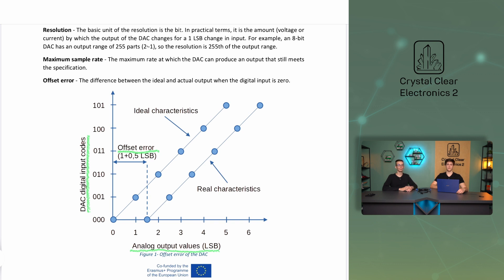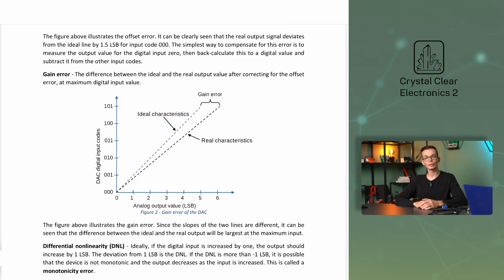The simplest way to compensate for this error is to measure the output value for the digital input 0, then back-calculate this to a digital value and subtract it from the other input codes. Next is the gain error: the difference between the ideal and the real output value after correcting for the offset error at the maximum digital input value. Since the slopes of the two lines are different, the difference between the ideal and the real output will be largest at the maximum input.